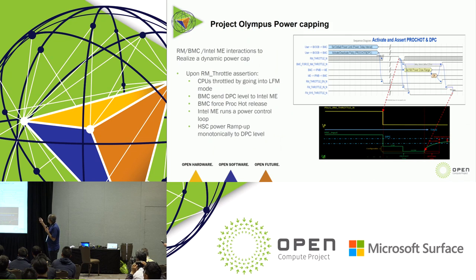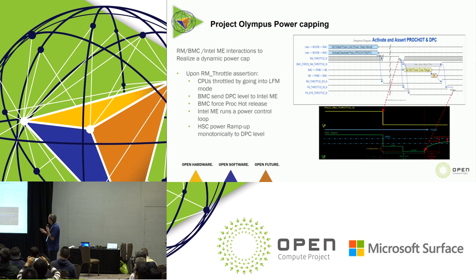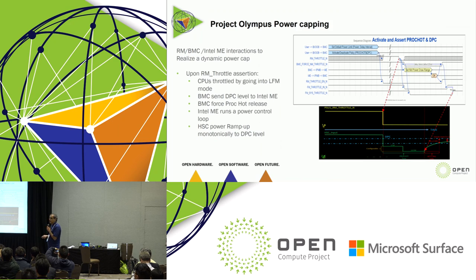There is a timing diagram showing the interaction between the BMC, rack manager, and Intel Node Manager to realize power capping. As soon as the proc hot or RM throttle is asserted, we go to low frequency mode and set the policy to Intel Node Manager. After that, Intel Node Manager takes over and ramps up to the newly defined policy.